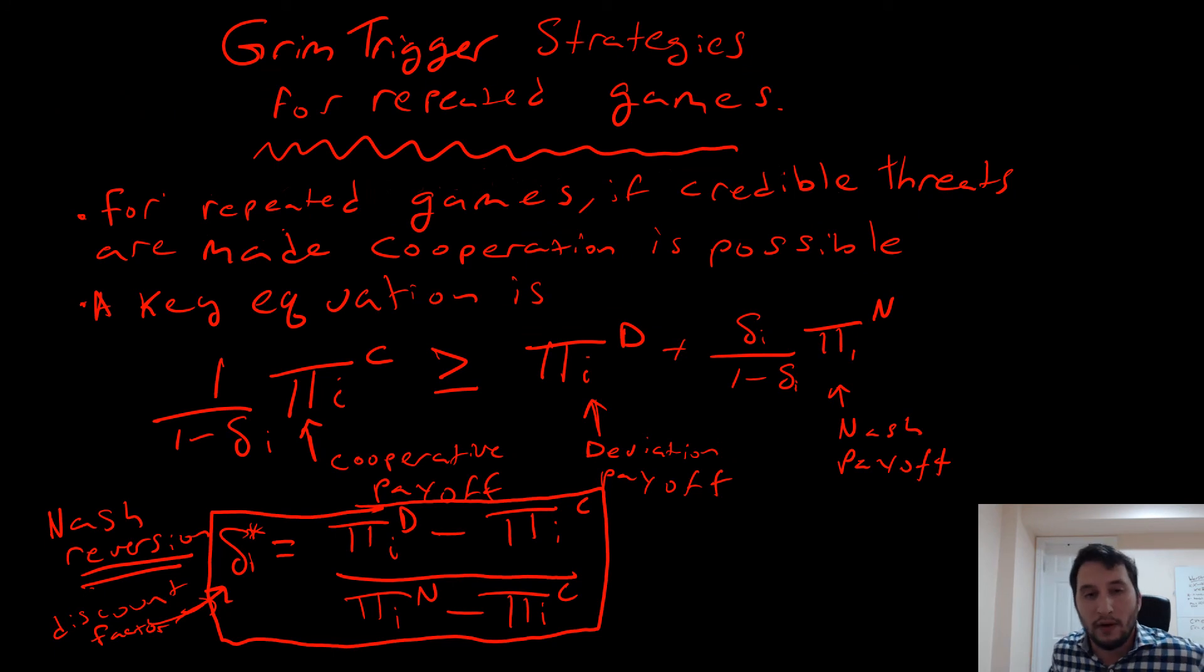We're going to talk about grim trigger strategies for repeated games. I'm not going to go into detail for what repeated games is, but it's a simultaneous move game repeated over time. What grim trigger allows us to do is that if credible threats are made, any possible equilibrium could be maintained. We consider this equation, meaning that the cooperative payoff has to be greater than or equal to the deviation payoff plus the discounted Nash payoff. This is just a result from lifetime discounting. Using this, we obtain our equation for Nash reversion, which is delta i star equals the ratio of the difference of our deviation payoff minus our cooperative payoff over the Nash payoff minus our cooperative payoff.